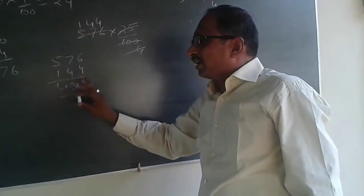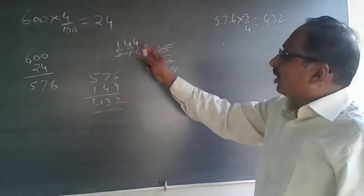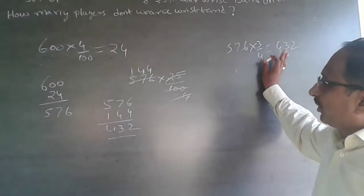So don't do all this. Multiply it here. Simple way. 3 into 144 will be 432. So this is the shortcut of doing it.